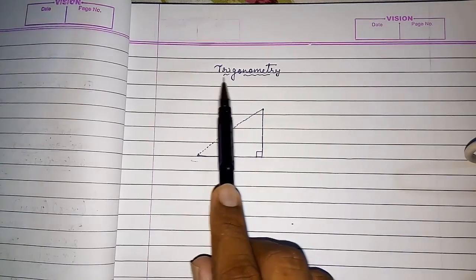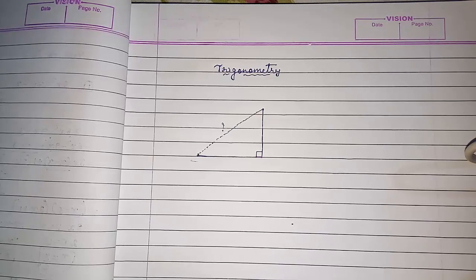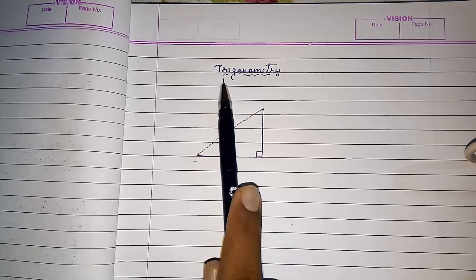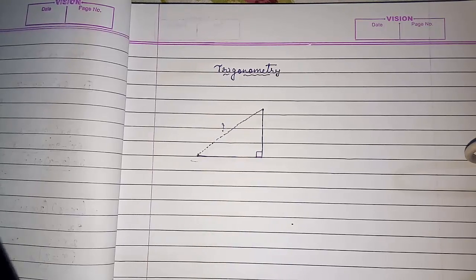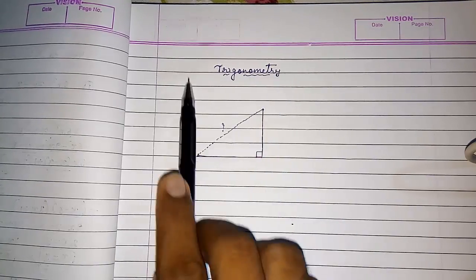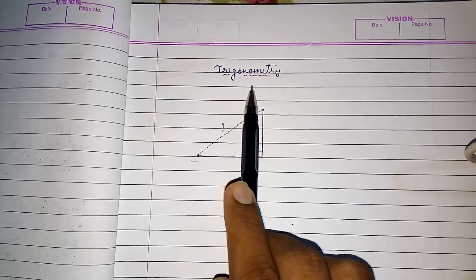Hello friends, today we are going to study about trigonometry. In ancient times, mathematicians wanted to find the distance between the stars and planets. They could not directly find those distances, so they started a different branch of mathematics called trigonometry. With the help of trigonometry, they found out the distance between different stars and planets. It has a great role in the development of our world, so it is very important to study.